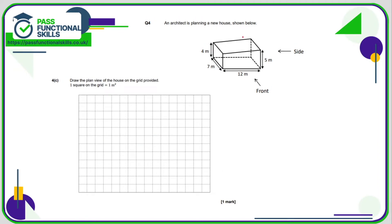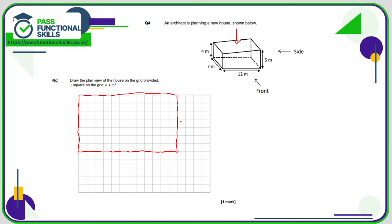Now we need to do the plan — that is the view from above. We're going to see a rectangle which is seven by 12. So we count seven up and 12 across, join these up, and there we have the plan view. Obviously using a ruler would be better.